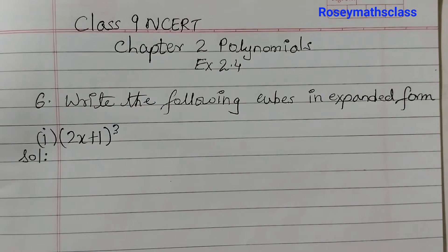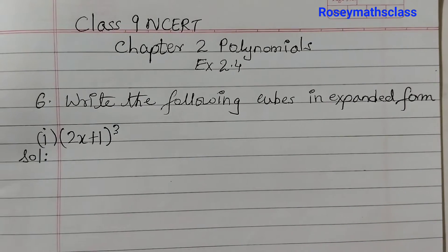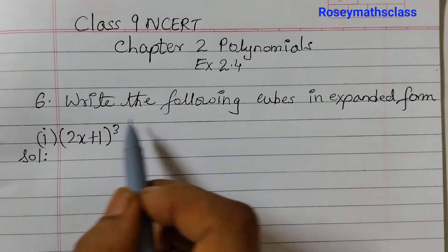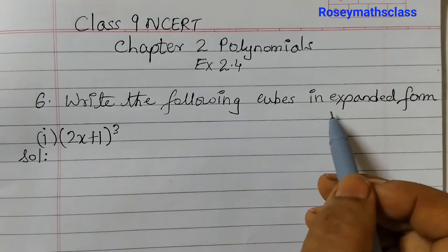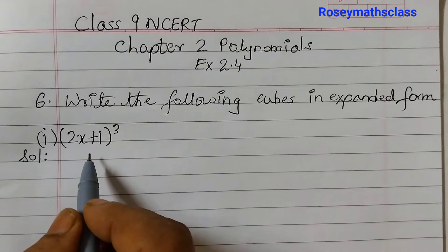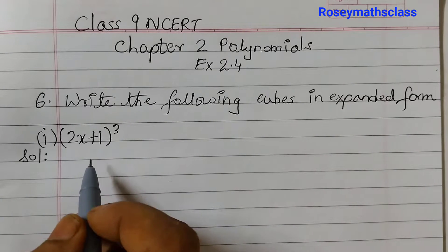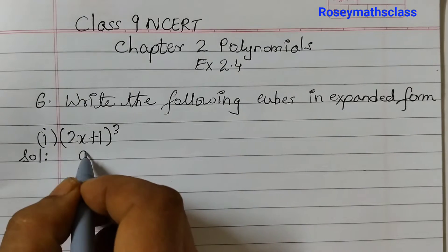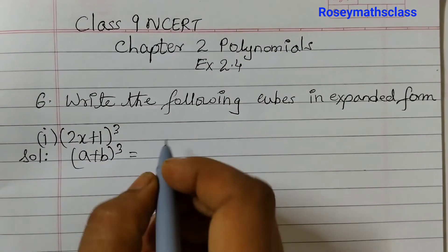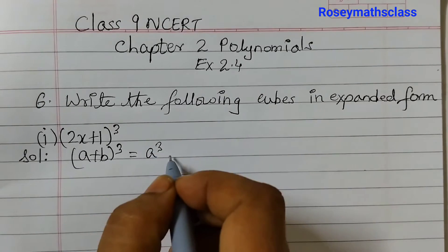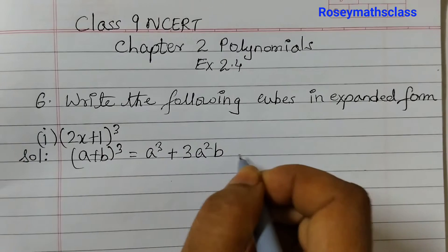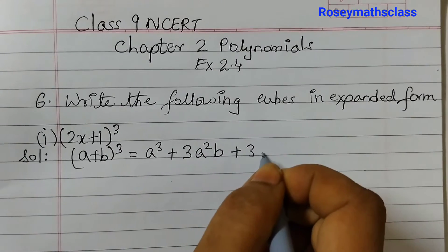Hello students. In this video we shall discuss question number 6 of exercise 2.4 — write the following cubes in expanded form. For this we will use the identity: (a + b)³ = a³ + 3a²b + 3ab² + b³.